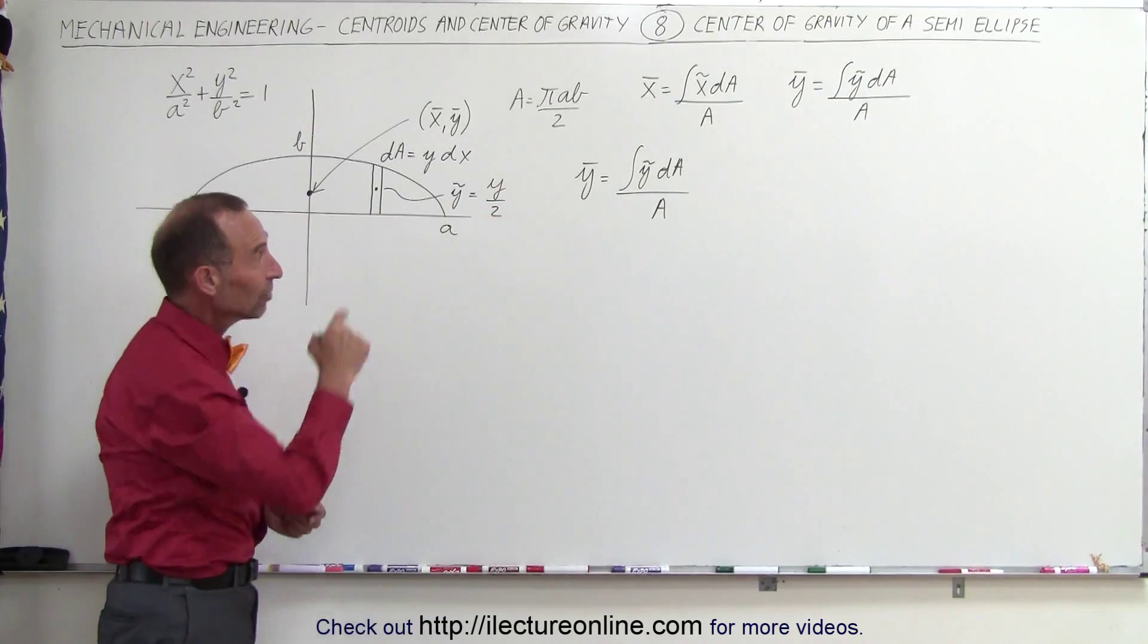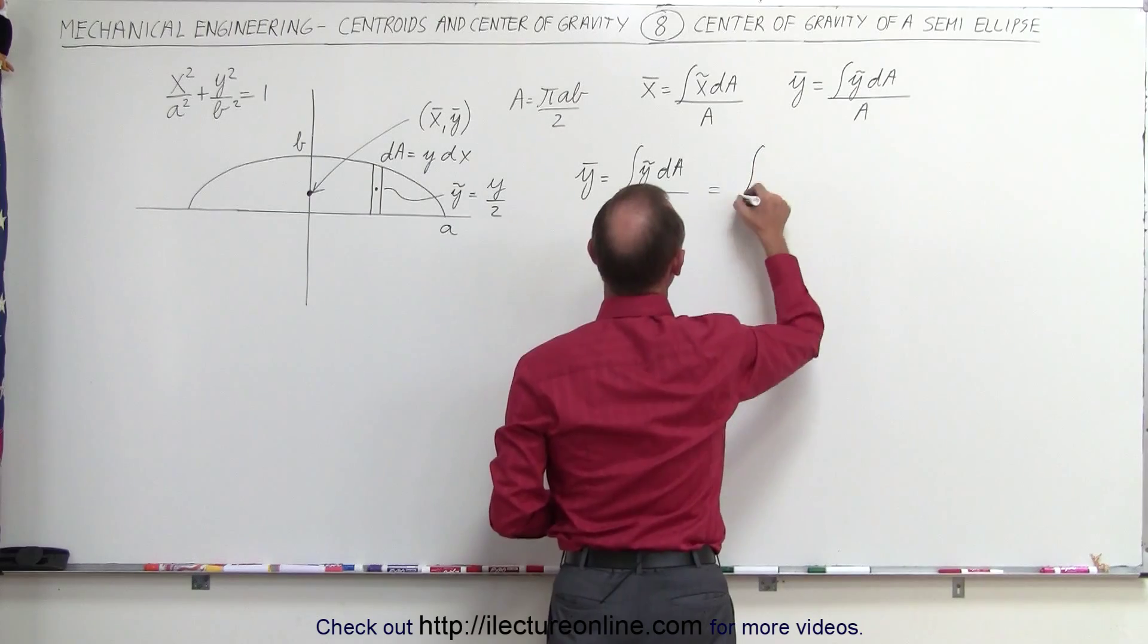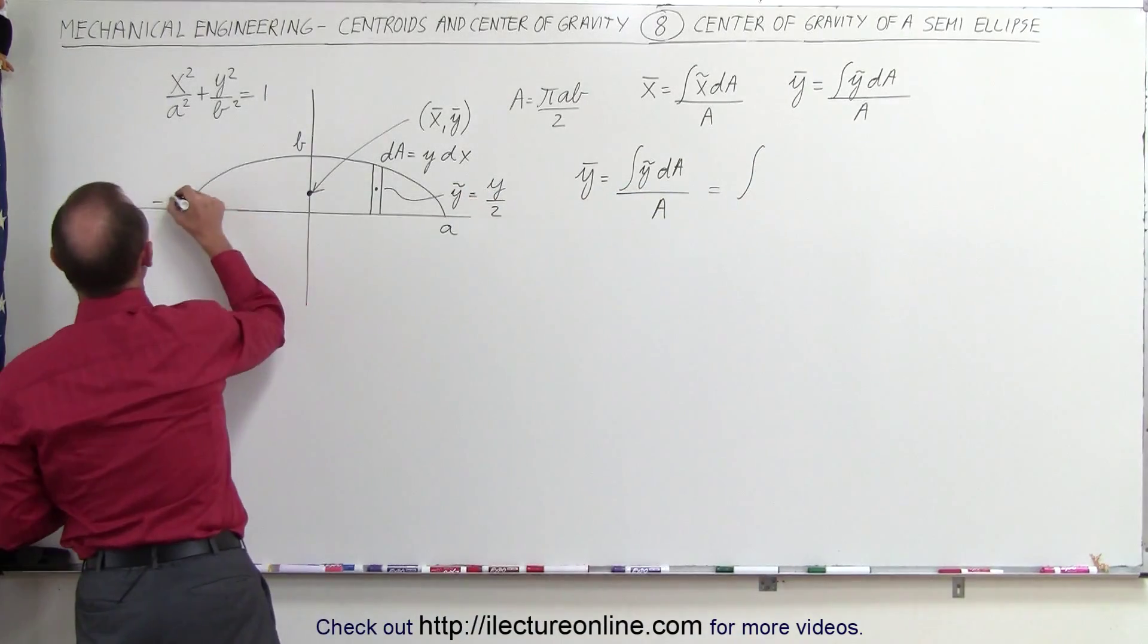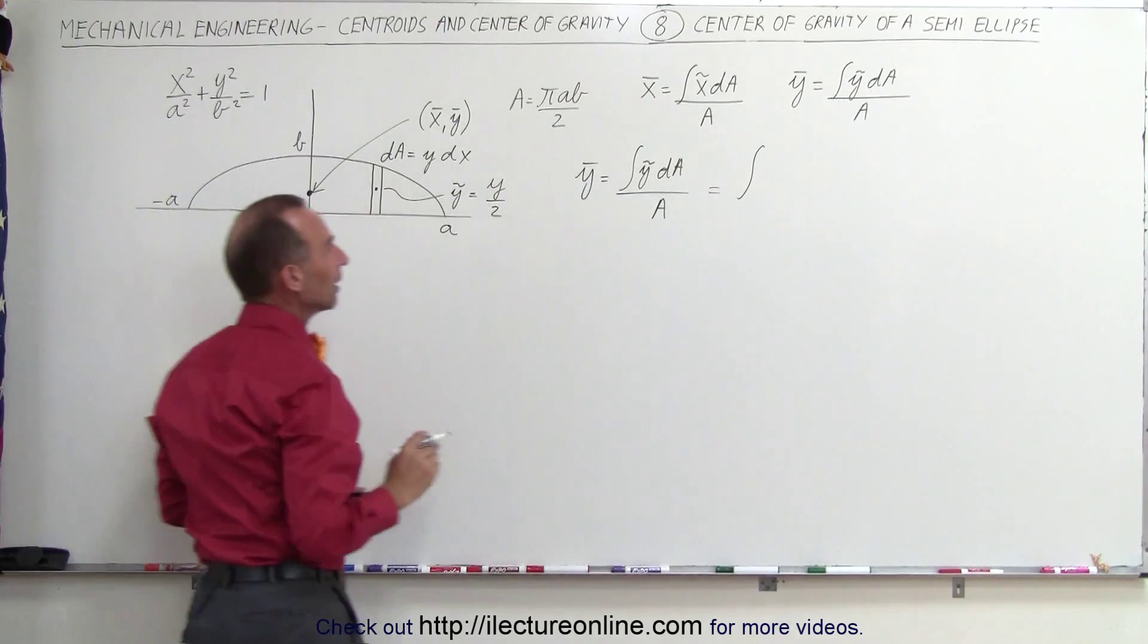Plugging those into our equation here, we get the following. Since we're going to integrate from minus A to A, it might be better just to integrate from 0 to A and double that integral.